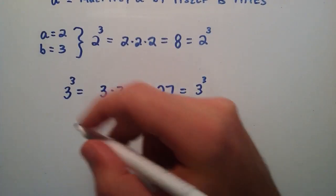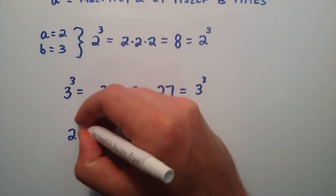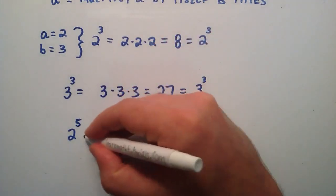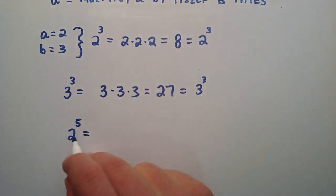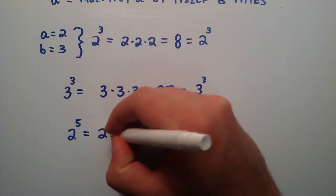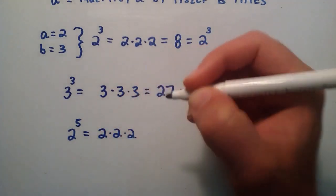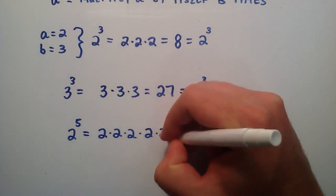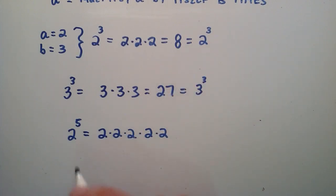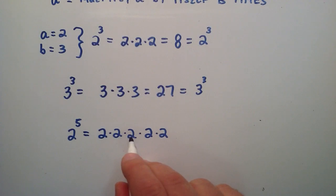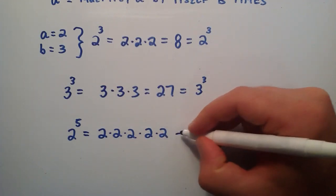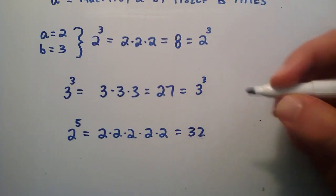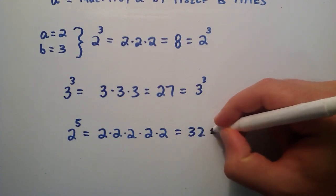What if we had 2 to the fifth power? That's the number 2 multiplied by itself 5 times: 2 times 2 times 2 times 2 times 2 times 2. Five 2's multiplied together. 2 times 2 is 4, 4 times 2 is 8, 8 times 2 is 16, and 16 times 2 is 32. So 2 to the fifth power is equal to 32.